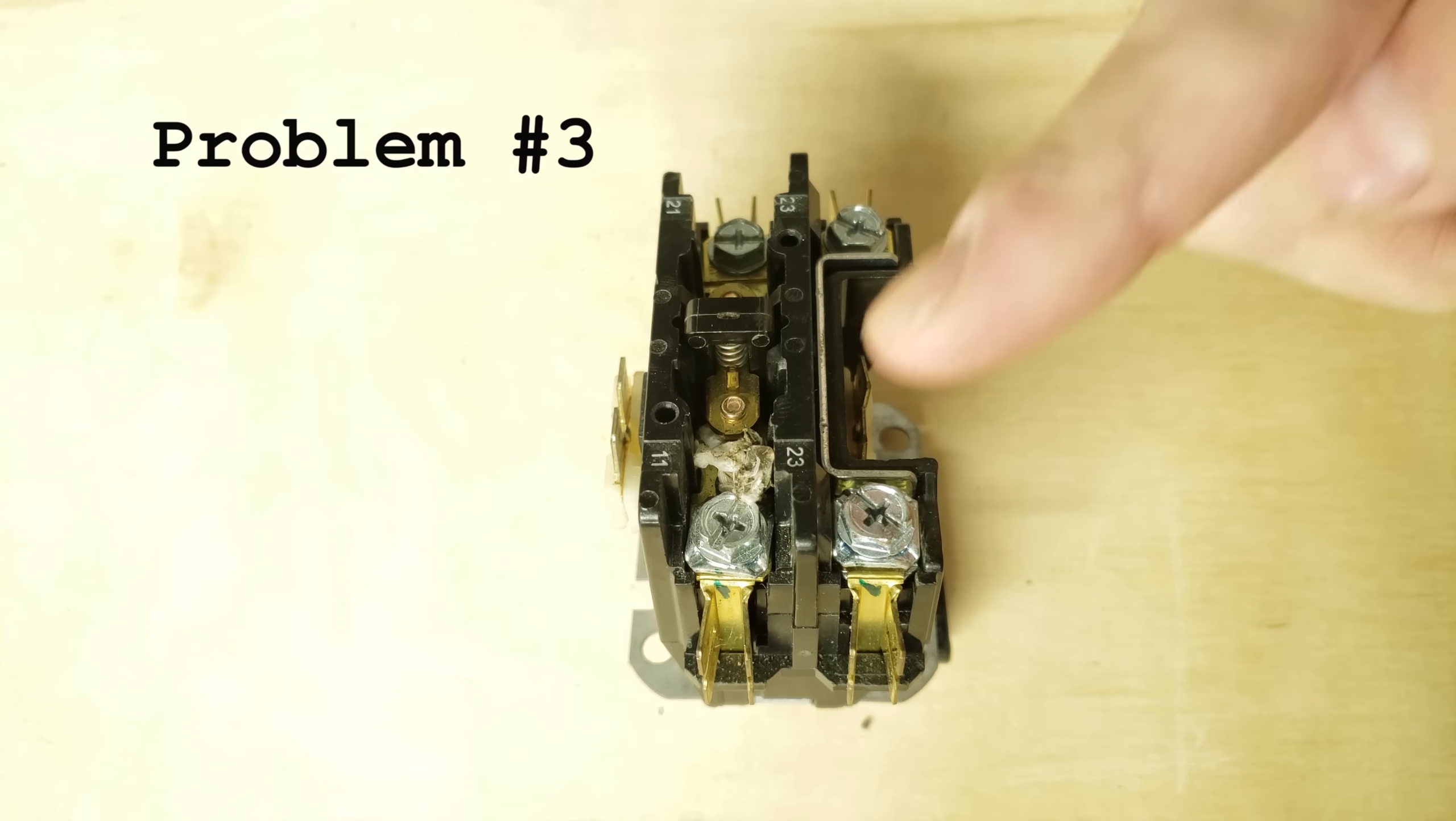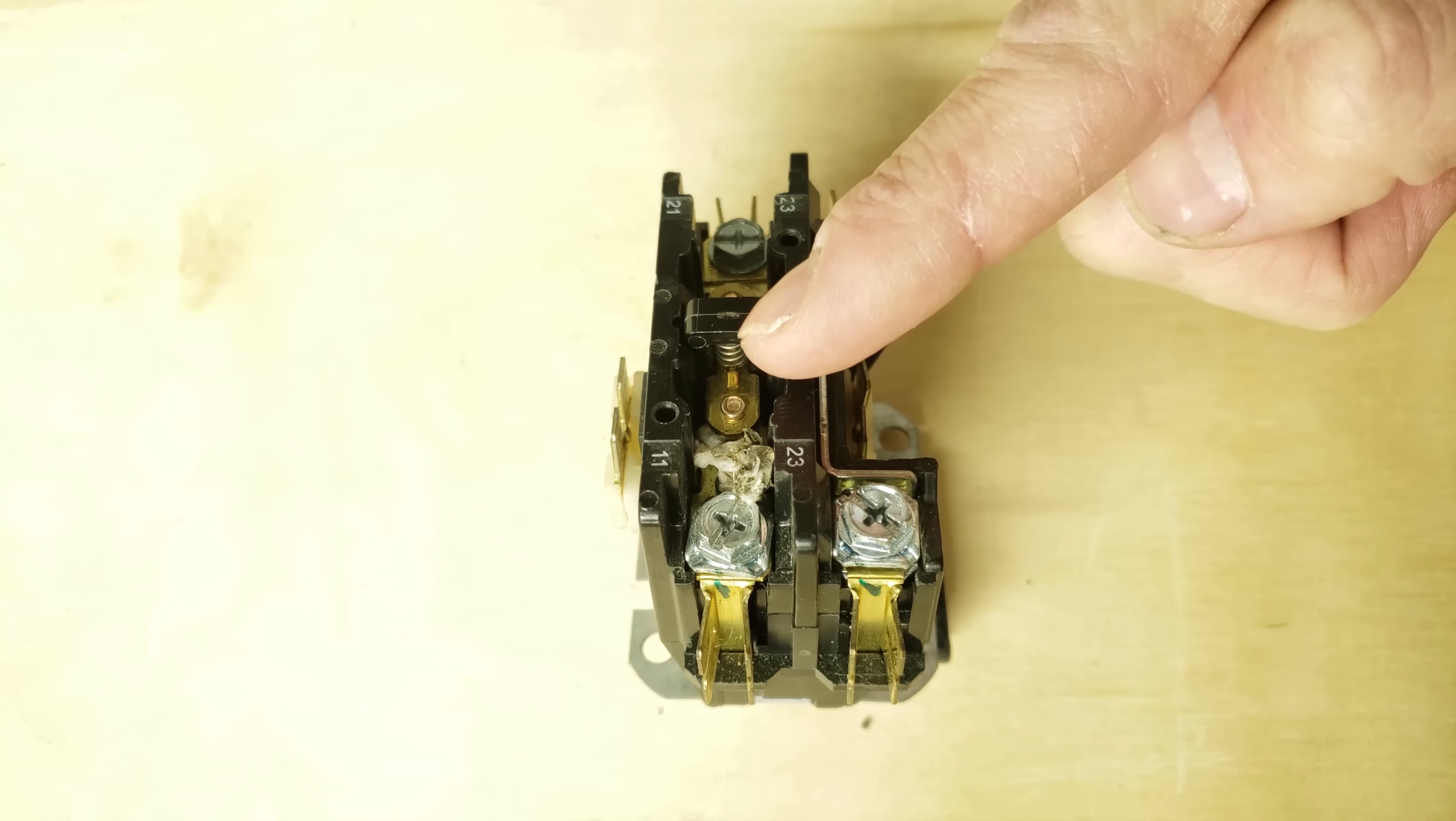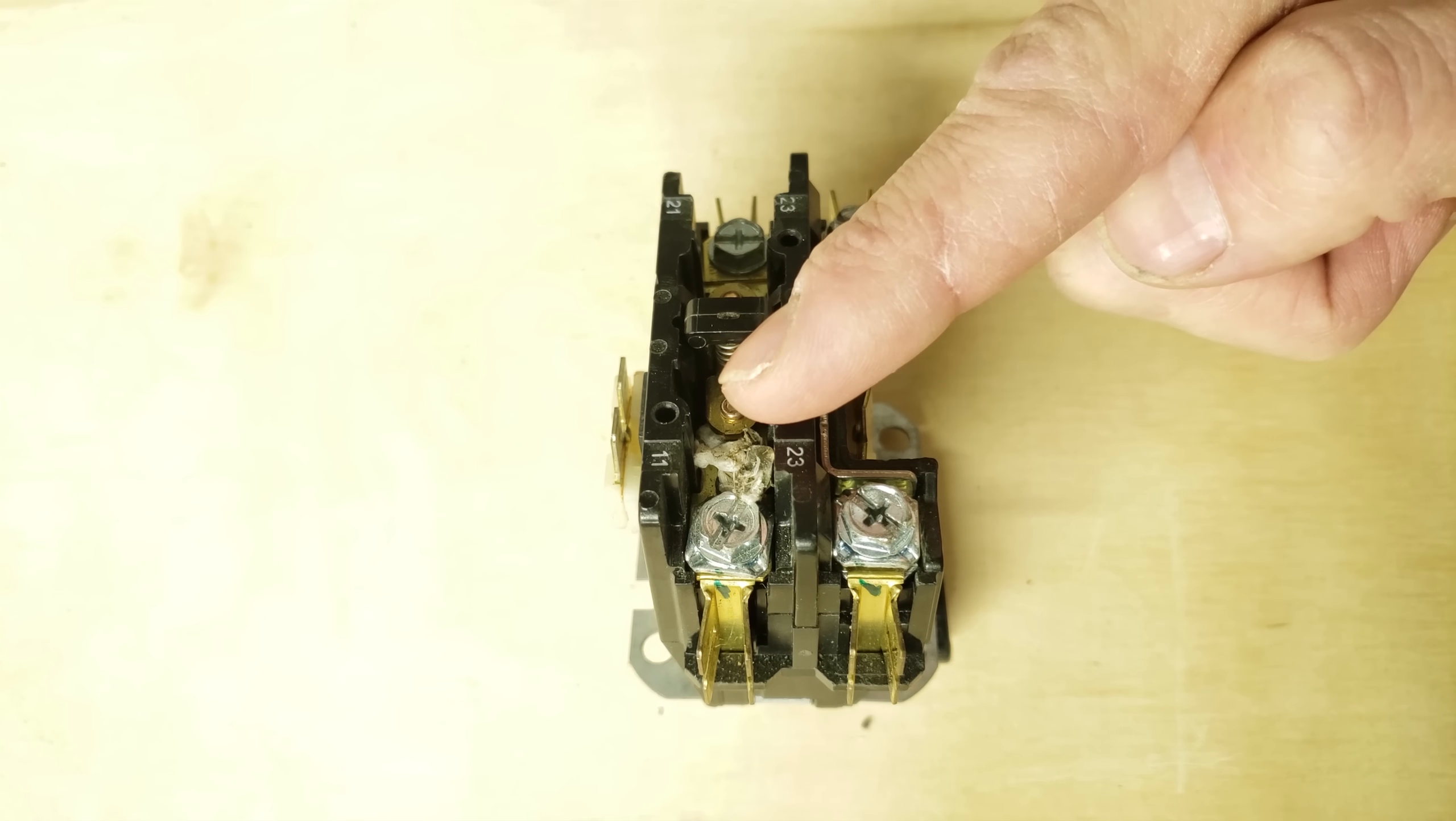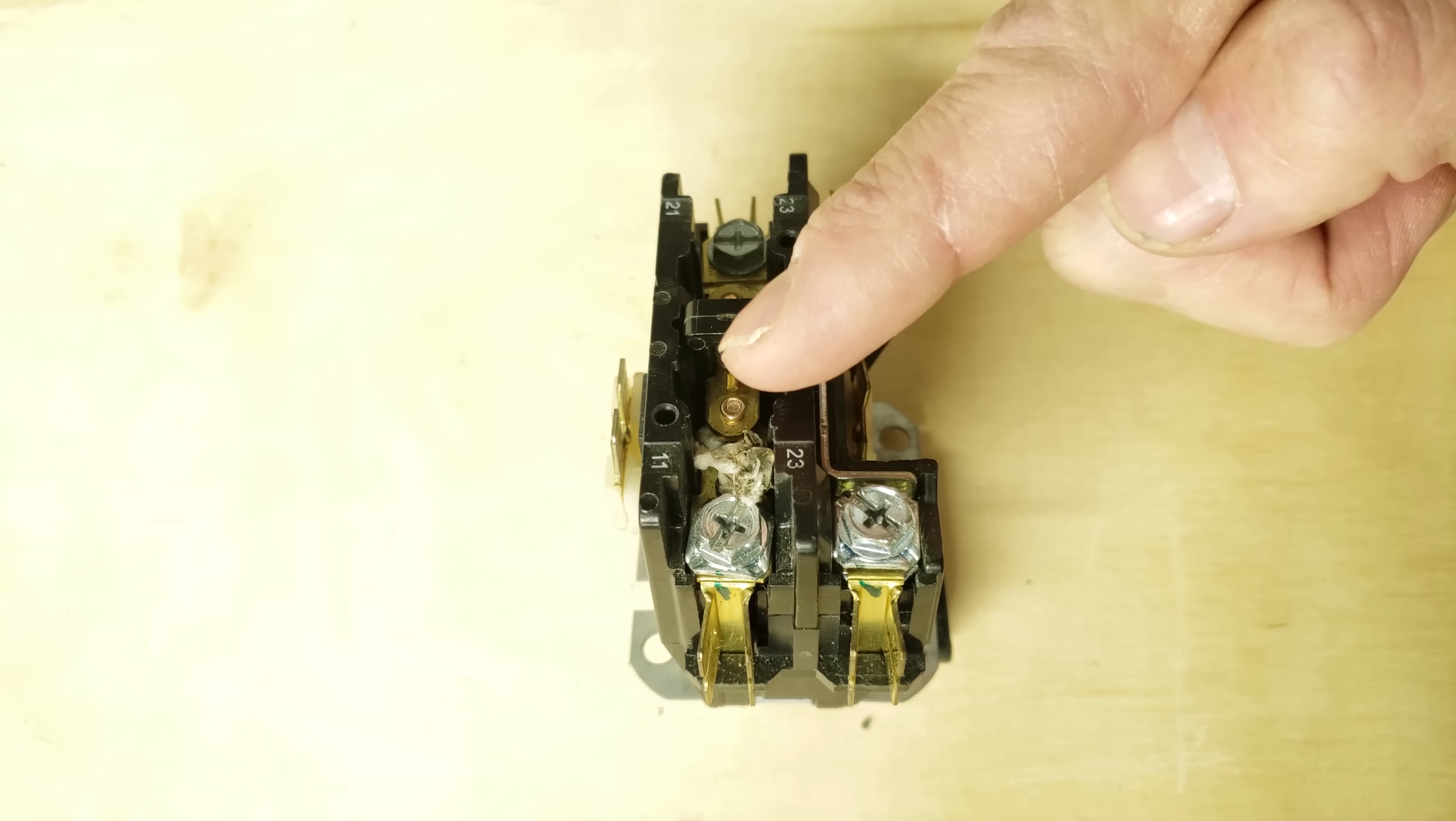Problem number three could be ants or some other type of insect that's inside your contactor, right in the contacts themselves, so when they close they're either hanging up or just not making contact completely. You could also have cobwebs. I find a lot of cobwebs around here and even other trapped insects in the cobwebs. Spiders in there and ants.